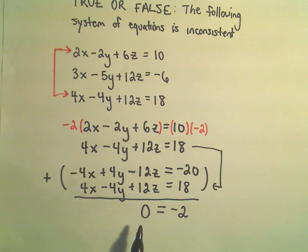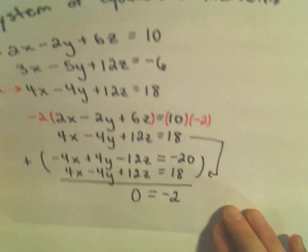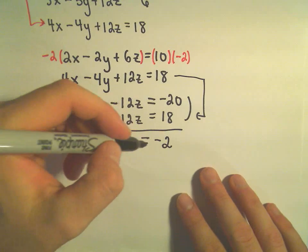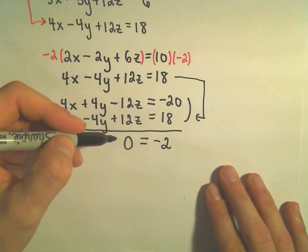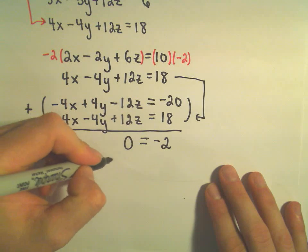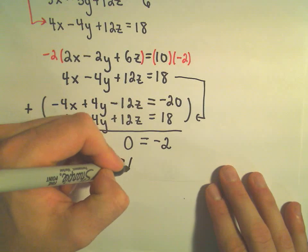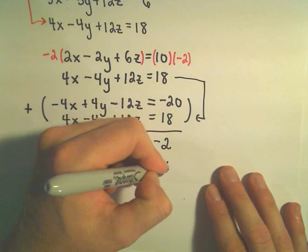So this says, hey, 0 equals negative 2, which is clearly not the case. So this statement, this nonsense, this clearly not true statement, it's trying to tell you something. And what it's trying to tell you is, there is no solution.